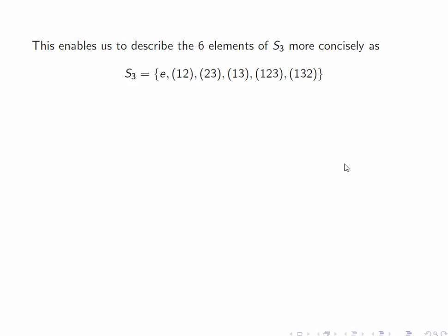Then in this notation, we can describe much more succinctly the 6 elements of S3. They are just the identity, the transposition that flips 1 and 2, the transposition that flips 2 and 3, the transposition that flips 1 and 3, and the 3-cycles (123) and (132).